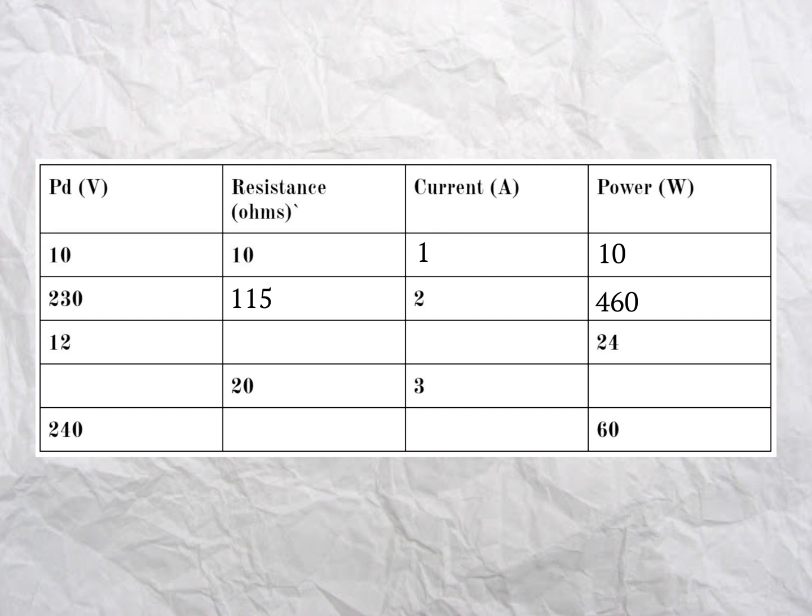The third line needs R and I, so we can't start with V equals IR because we don't know two of those things. But we can use P equals IV to get I. I is P divided by V, and P is 24 with V being 12. 24 divided by 12 equals 2 amps, so the current is going to be 2 amps. Now we can use V equals IR, so R will be V divided by I, which has become 12 divided by 2, which is 6 ohms. The fourth line, we need V and P, so use V equals IR first to get the PD. V equals 3 times 20, which is 60 volts. Then we can use P equals IV, so P equals 3 times 60, which is 180 watts.